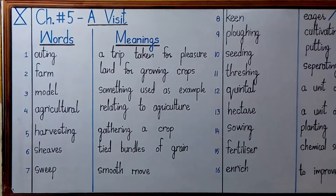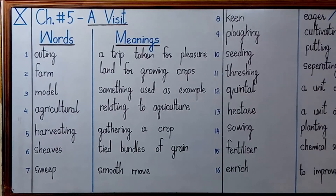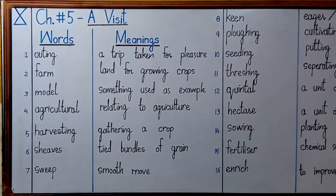We go for outings in different seasons, especially on rainy days. When the weather is cloudy, families go out to enjoy themselves — sometimes to recreational parks, sometimes to a farmhouse or different places. So that trip which is taken for pleasure or fun is called outing.